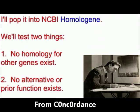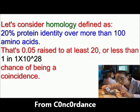Concordance will test the proposed gene using homology and other tools. For the purposes of the test, homology is defined as 20% protein identity over more than 100 amino acids — that's a probability of 0.05 raised to a power of at least 20, or less than one in 10^28 chance of being a coincidence. That's a pretty low probability.